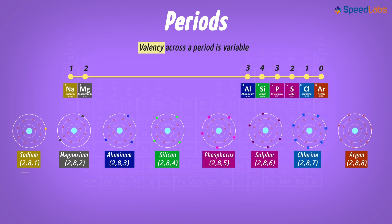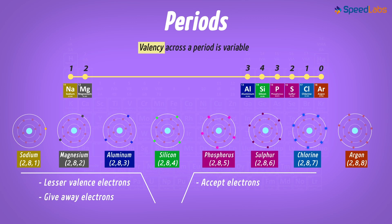Elements towards left have lesser valence electrons and hence give away electrons easily. And on the right, the elements show a tendency to accept electrons. This is because the number of valence electrons in these is greater. And inert elements which are on the extreme right have zero valency and they tend to neither accept electrons nor donate electrons.